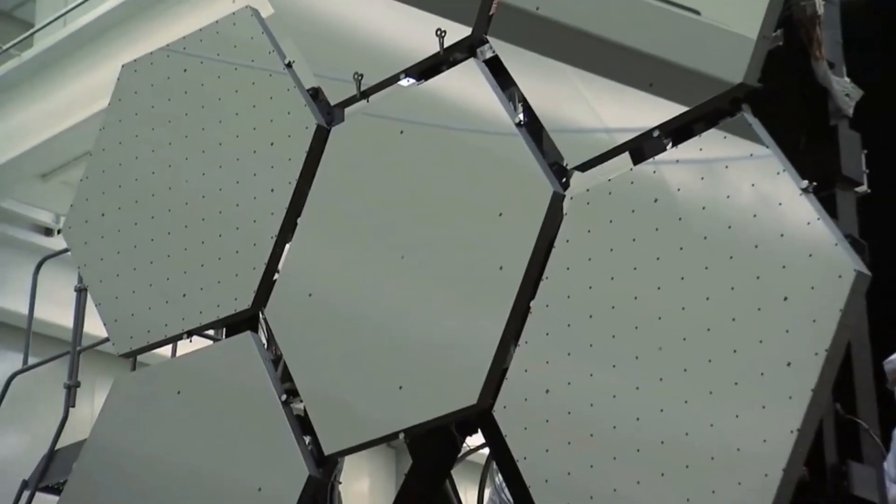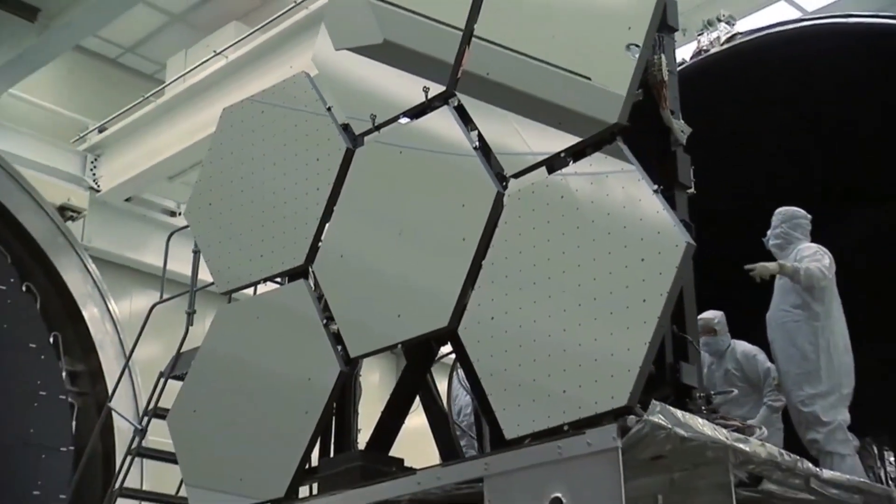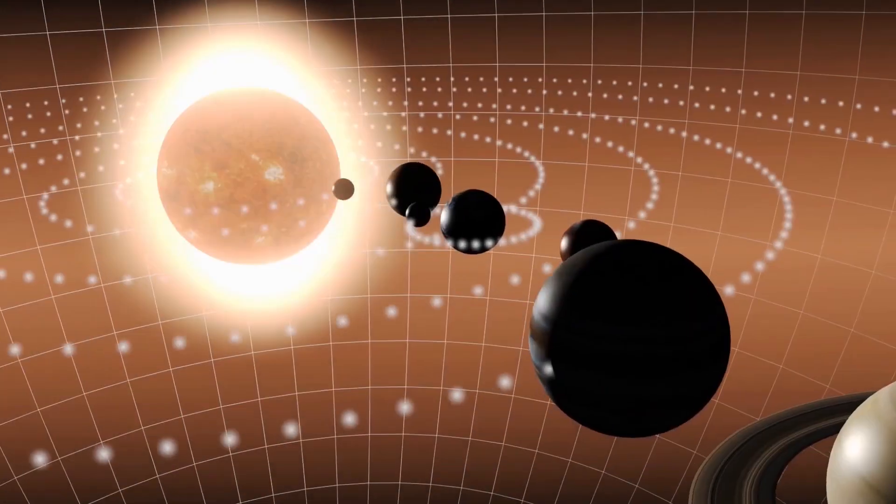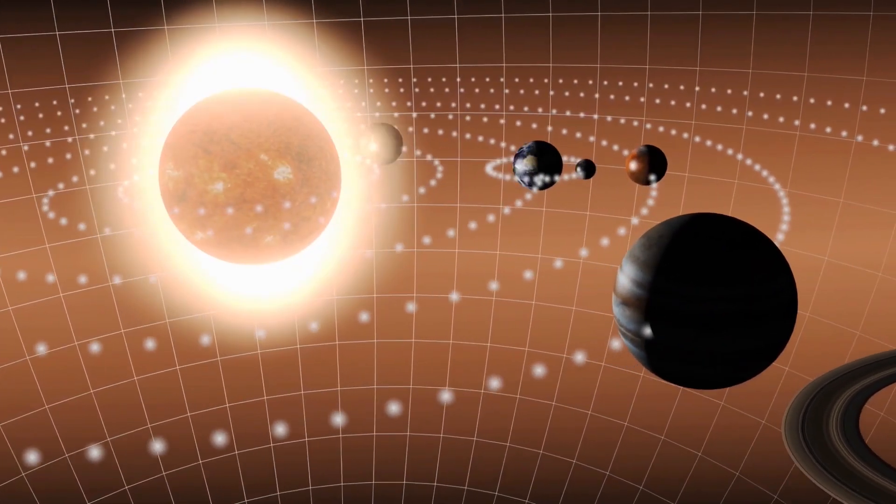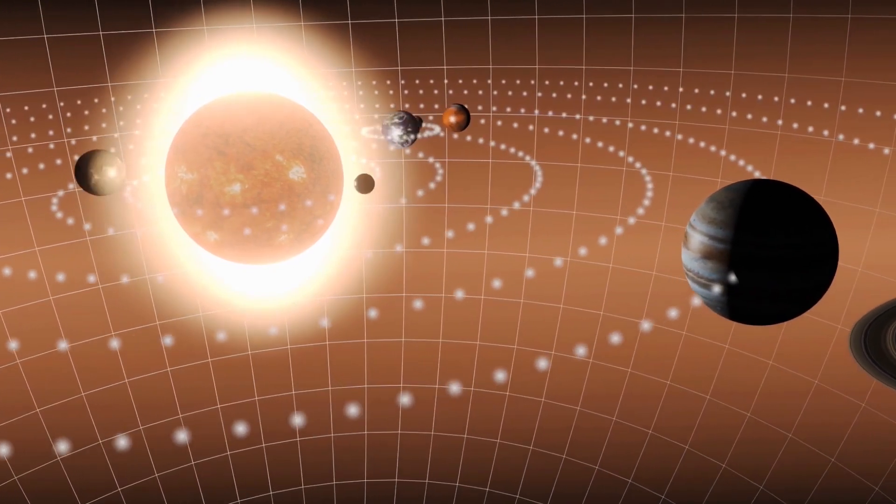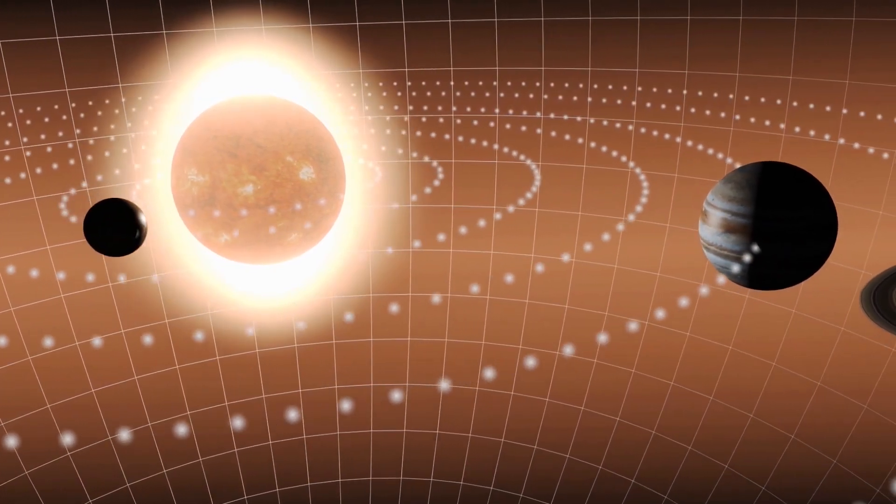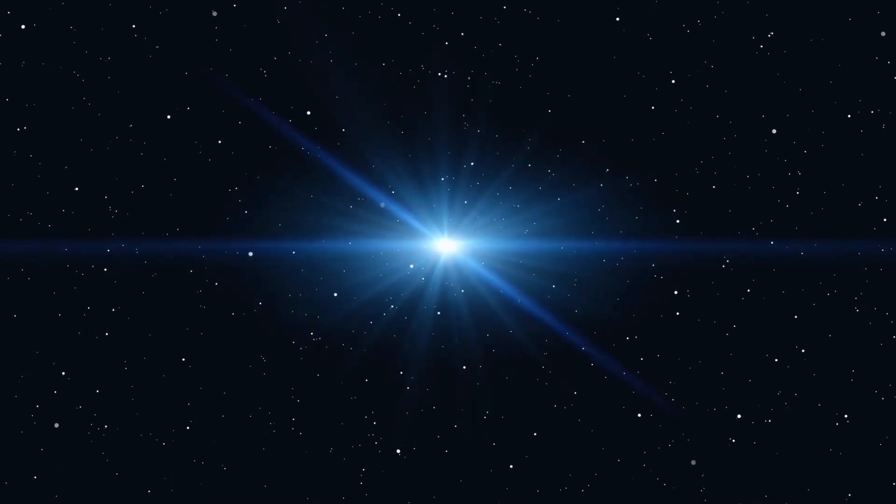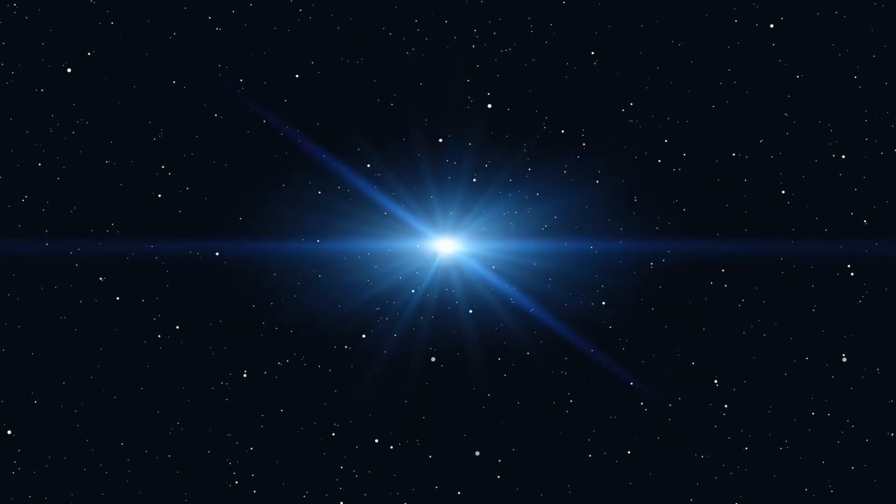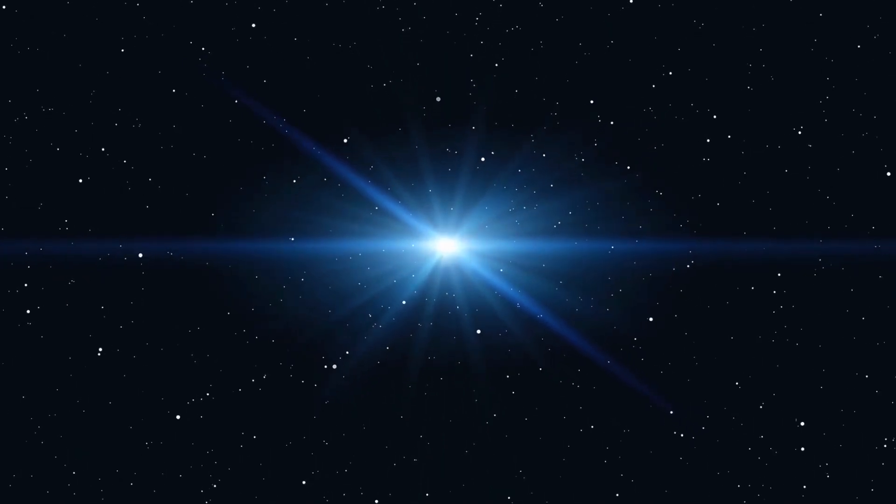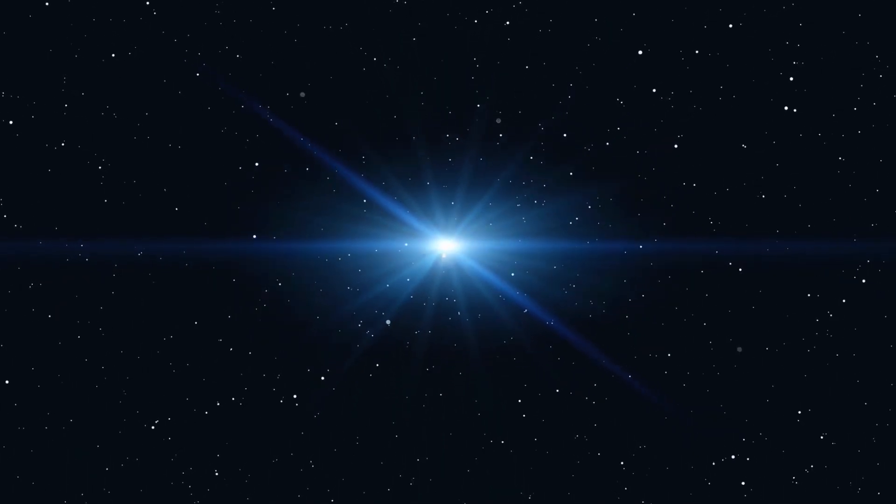Webb's unmatched infrared sensitivity has now confirmed the presence of carbon dioxide on this planet as well. The telescope captured the first clear evidence of carbon dioxide in the atmosphere of a planet outside the solar system with its study of this world. This observation of a gas giant planet orbiting a Sun-like star 700 light-years away provides important insights into the composition and formation of the planet.